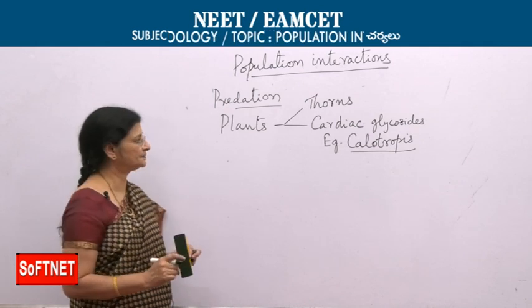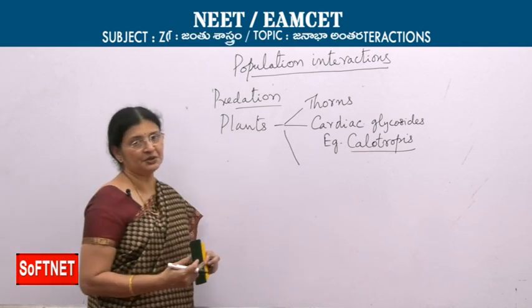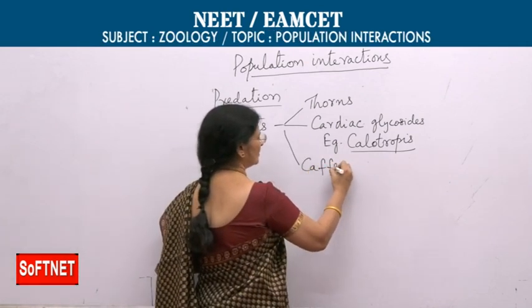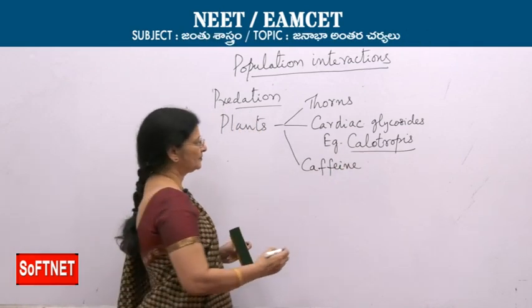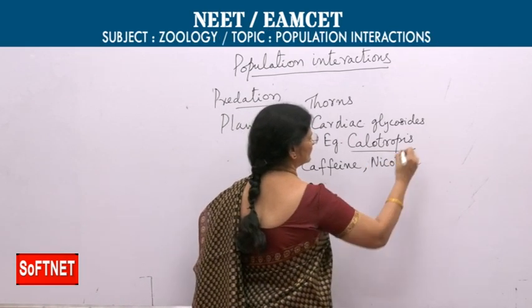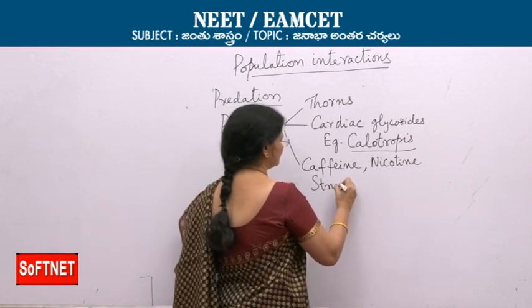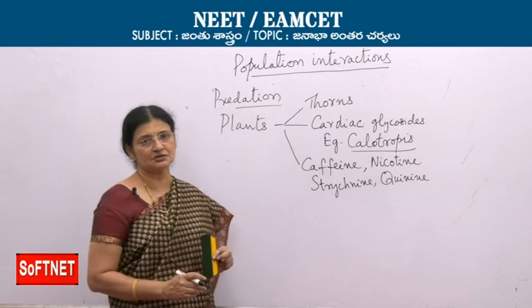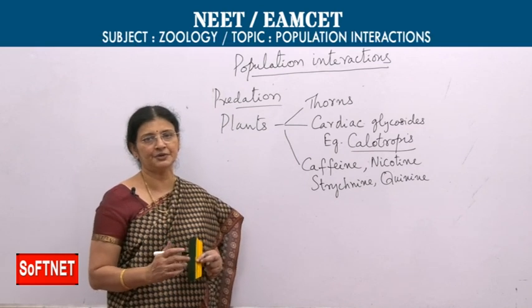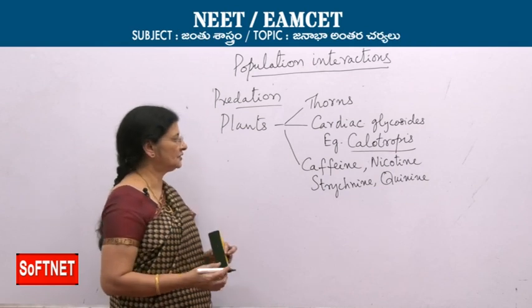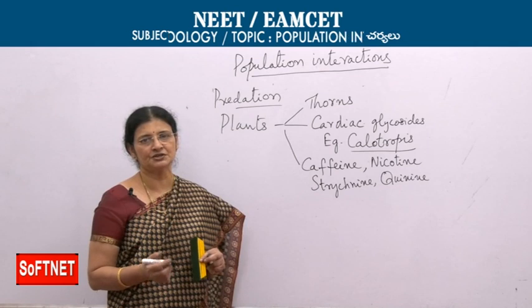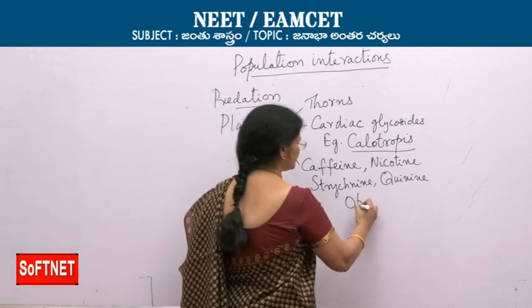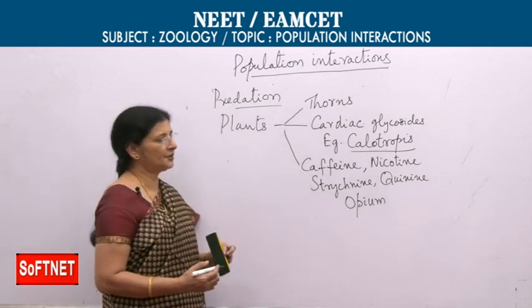Plants have developed many chemicals that we now extract and use for different purposes — caffeine from Coffea arabica, nicotine from tobacco, strychnine, and quinine. These chemicals were developed by plants to become repulsive to predators, but we now use them in medicines and as stimulants. Opium, for example, is used as a painkiller.